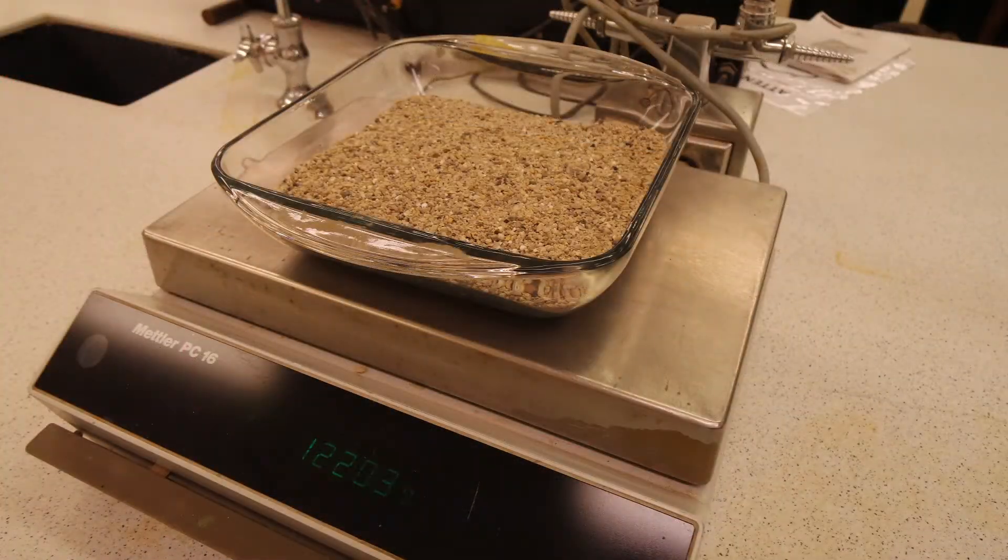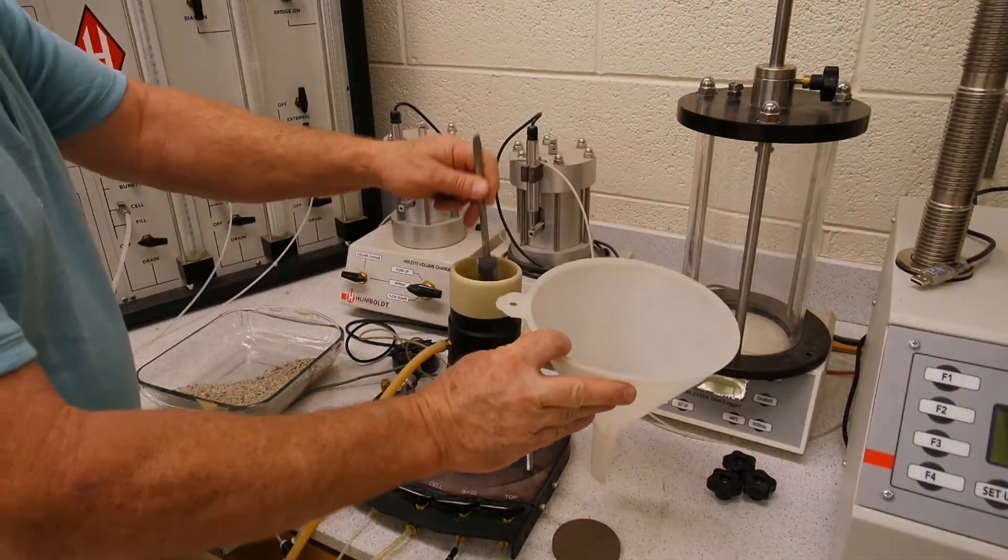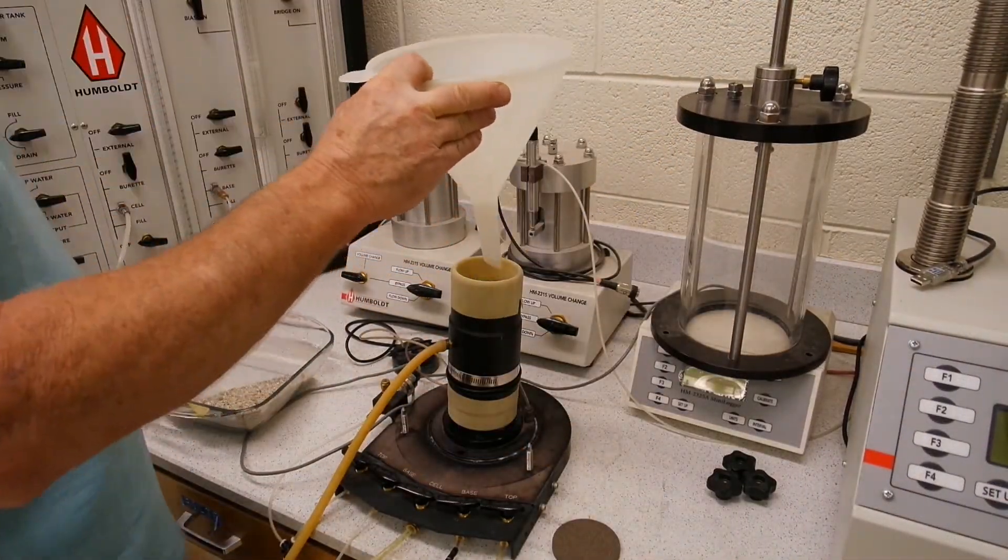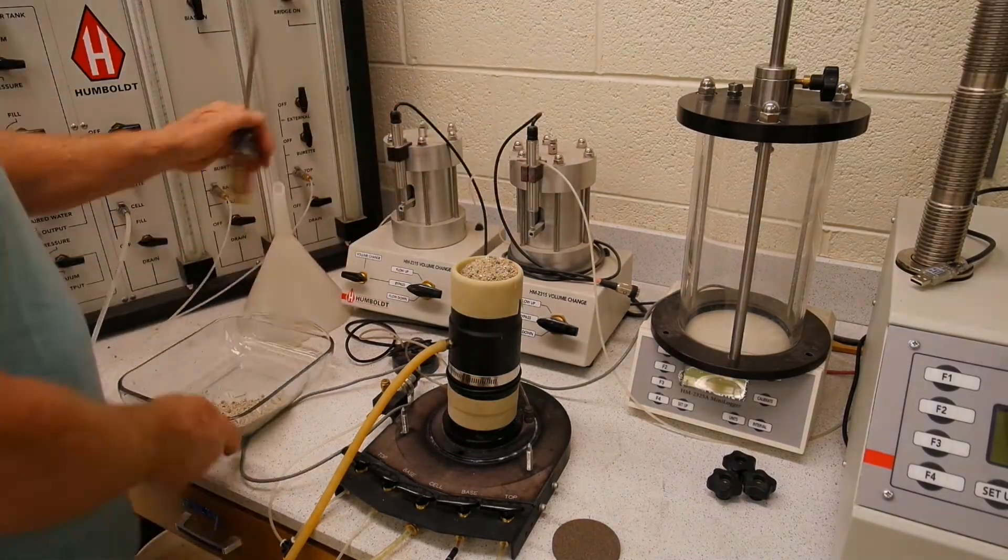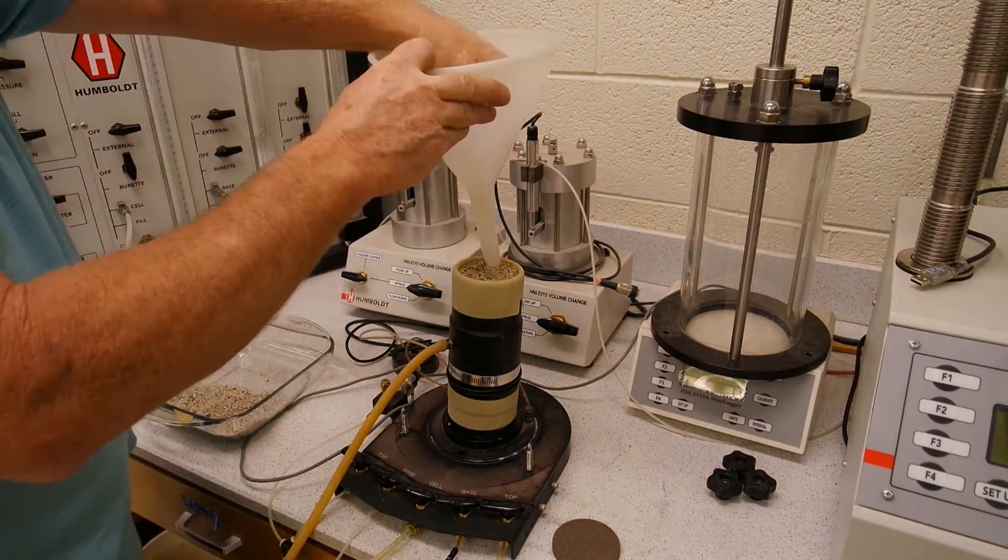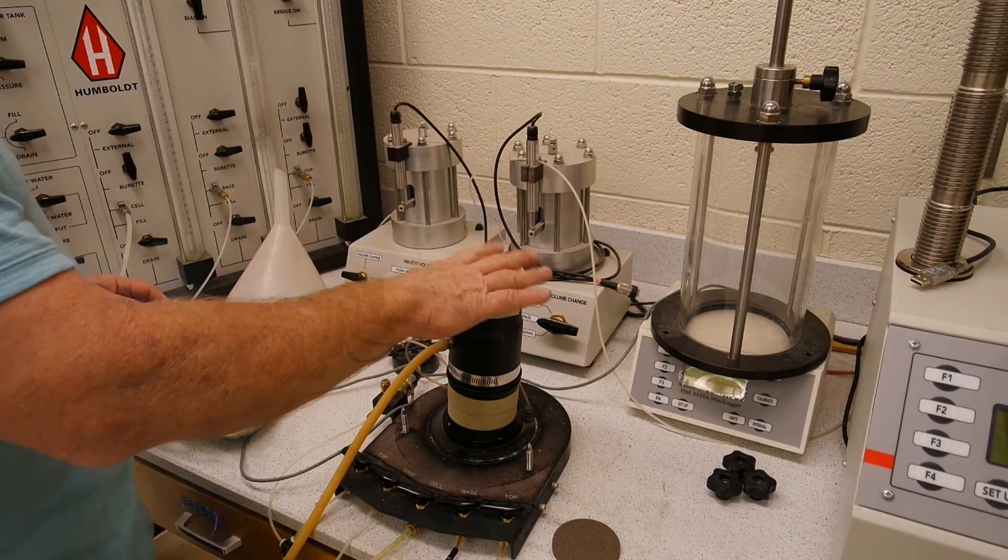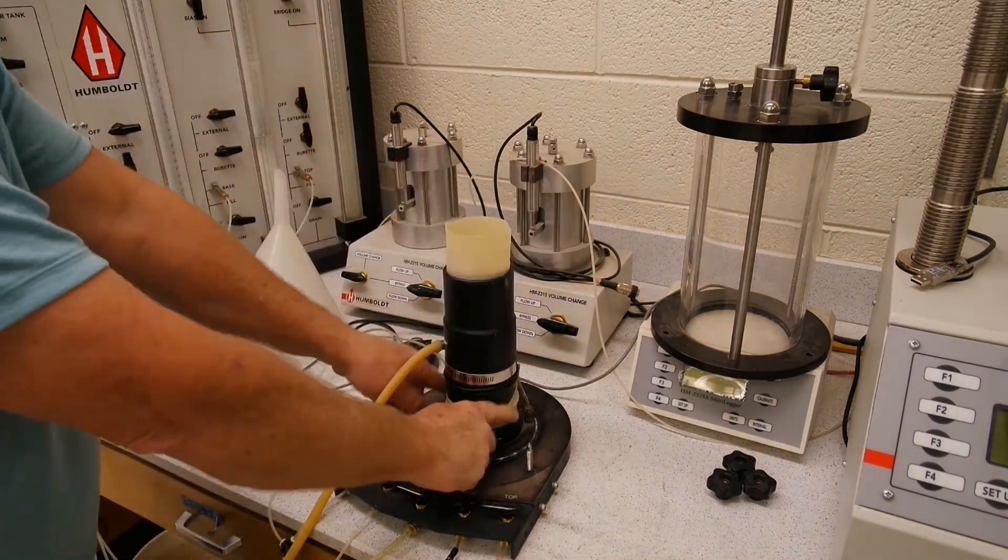The sample has already been set up in the triaxial cell with a flexible wall surrounding it and 10 psi of confining pressure to hold it in place. I am going to give you a rundown on how the sample was set up.